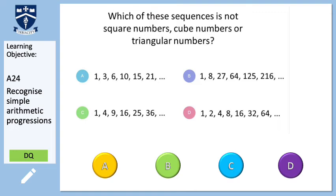You may notice that the first one is actually our triangle numbers — 1, 3, 6, 10, 15, 21 — so it can't be that. The next one, C, is our square numbers: 1, 4, 9, 16, 25. Can't be that. Looking at B, these are our cube numbers: 1×1×1=1, 2×2×2=8, 3×3×3=27. So it can't be B. Therefore the answer is D.